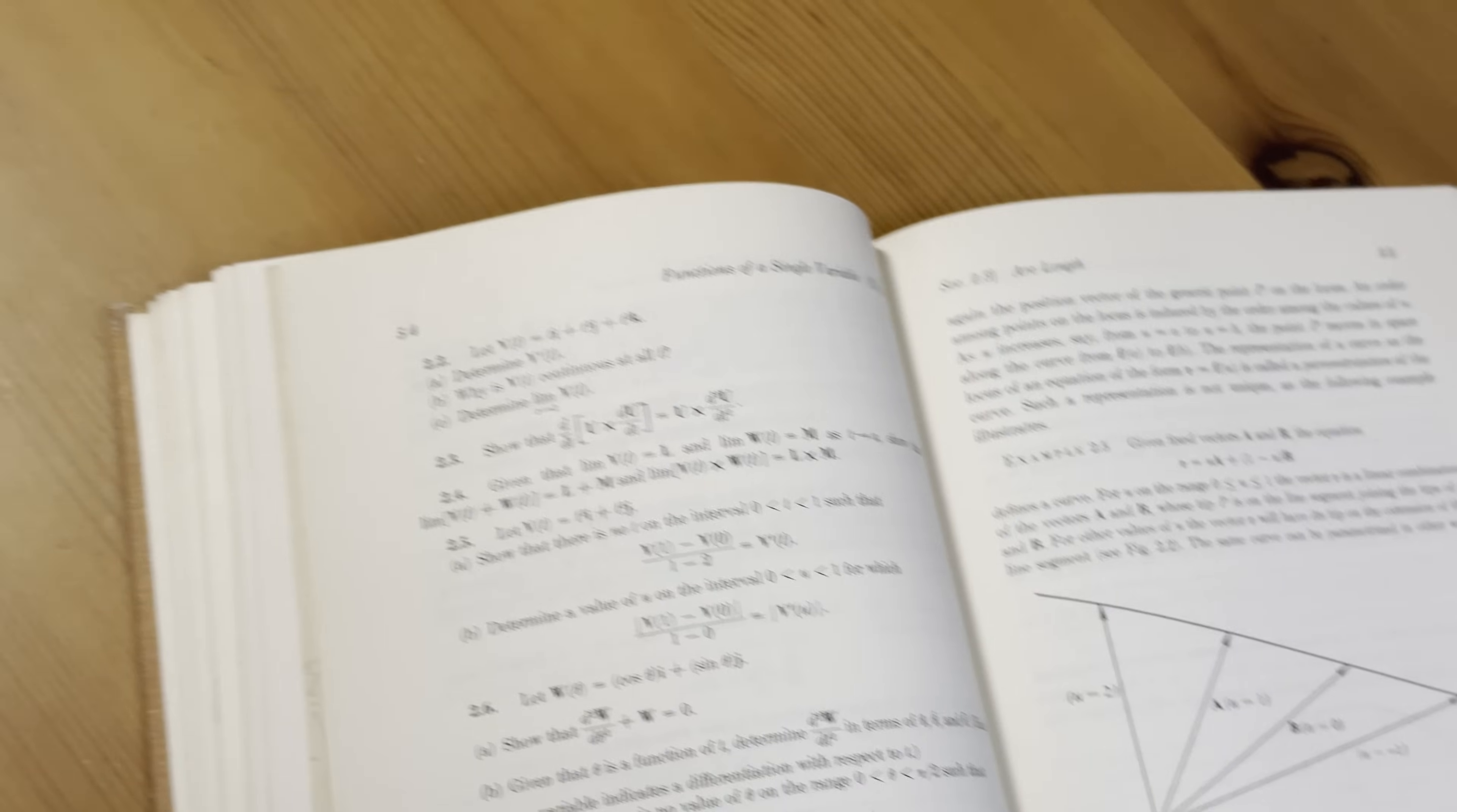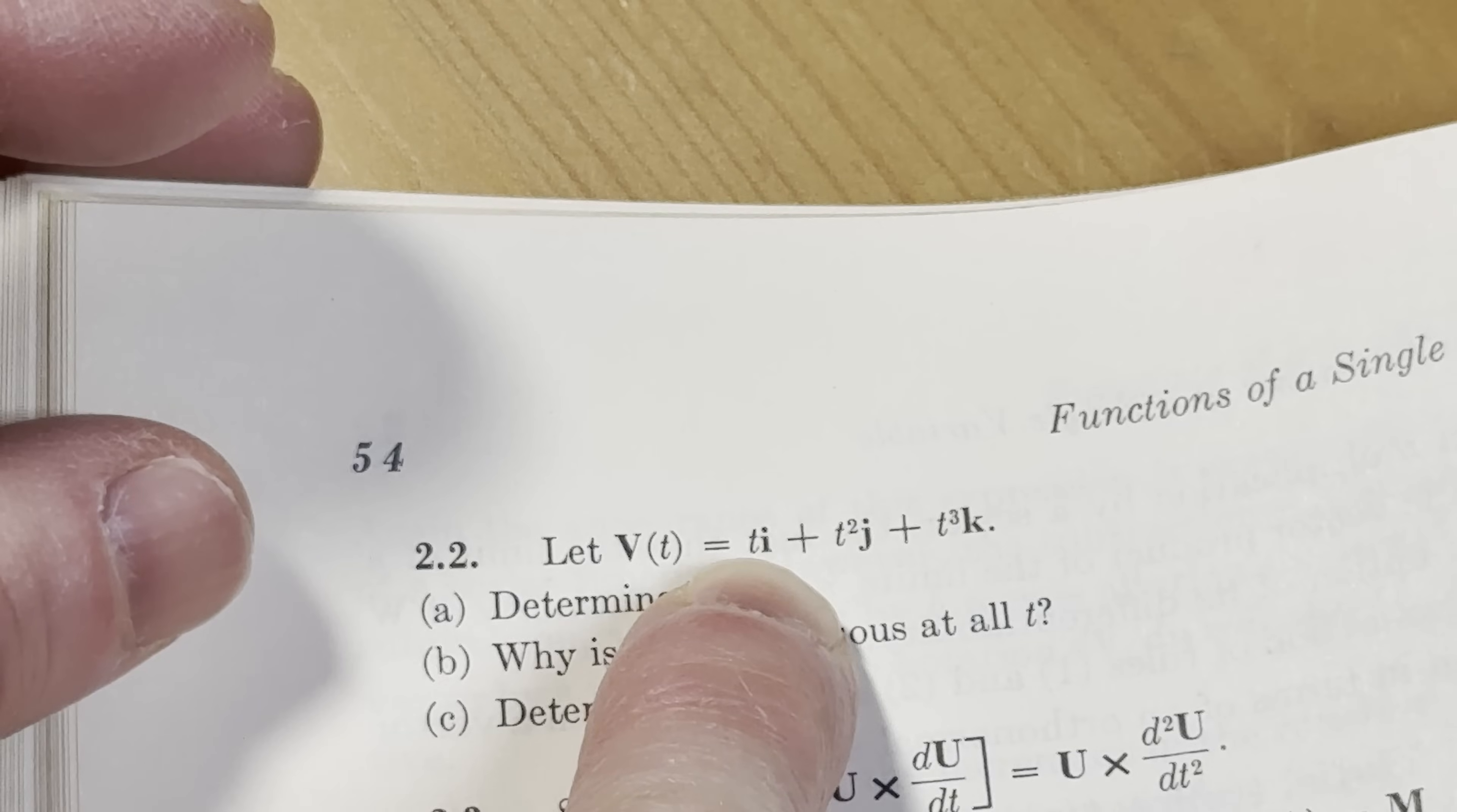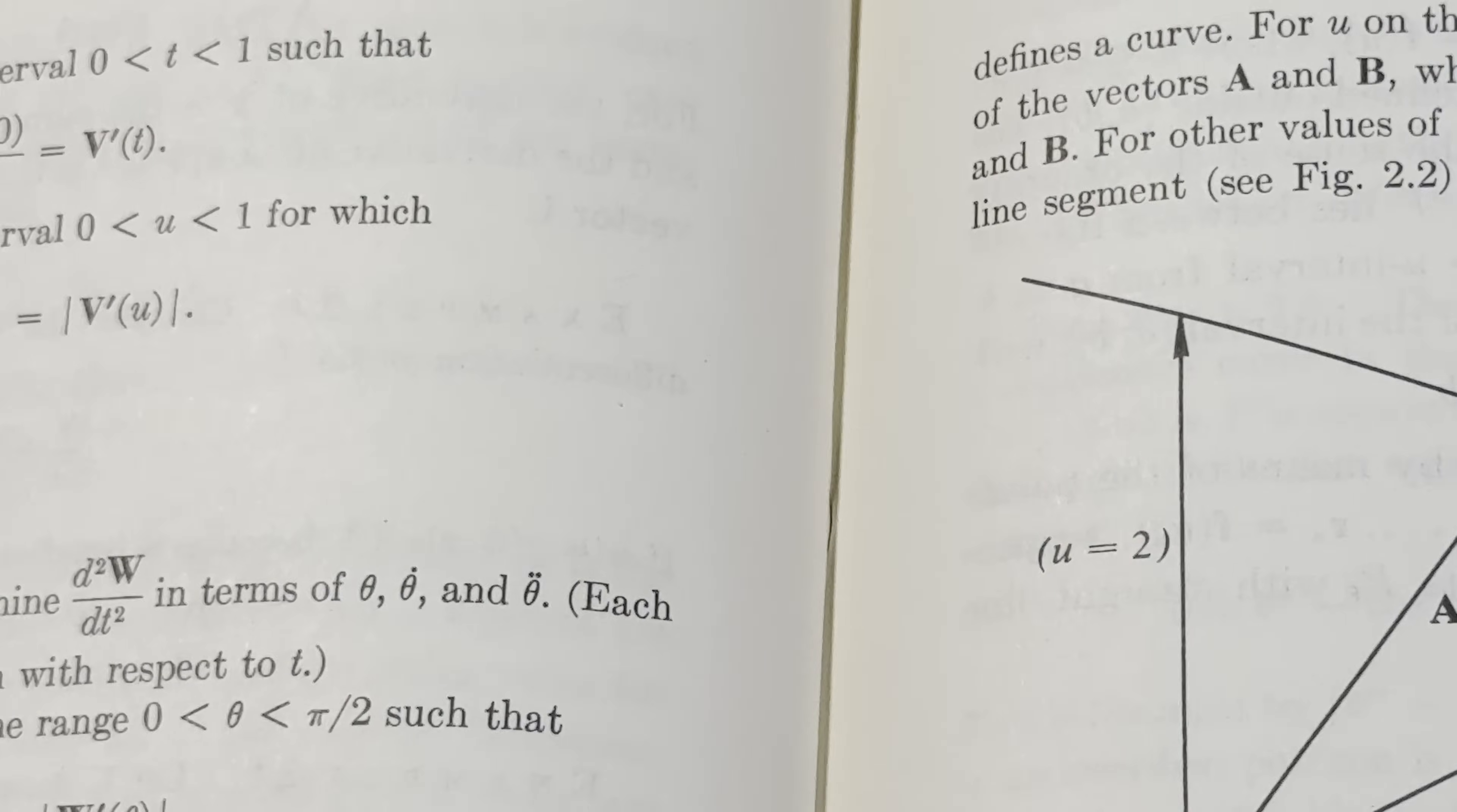To differentiate, it's really easy. Here's a vector valued function. It's a vector function of a single variable. It's vector valued because when you plug in a value for t it spits out a vector. You have i, j, and k. That's a vector in three-dimensional space. To find the derivative you just differentiate each piece. The derivative of t is 1, so you get i plus 2tj plus 3t squared k. That would be the answer to part a. And then why is v of t continuous at all t? You can determine the limit as t approaches 2 by using continuity, by plugging in 2.